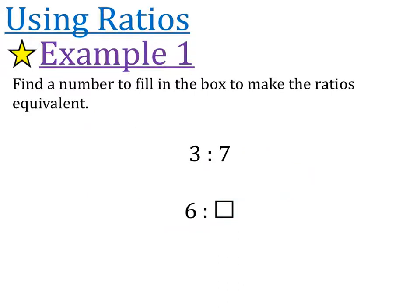Alright, next example, same idea. How do you get from 3 to 6? To get from 3 to 6, we can do times by 2. So to get from 7 to our new number, we're also going to times by 2. So the answer we're looking for is 14.